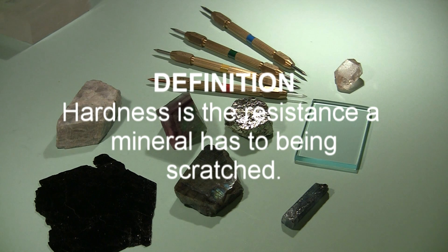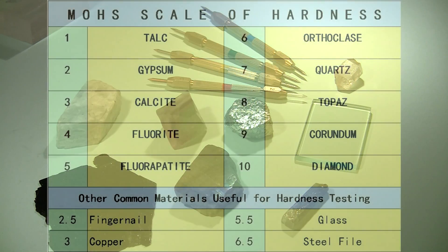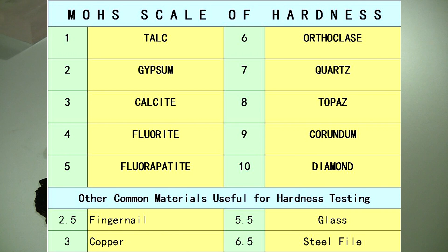Hardness is the resistance a mineral has to being scratched. It is a measure of the bond strength found in the mineral.